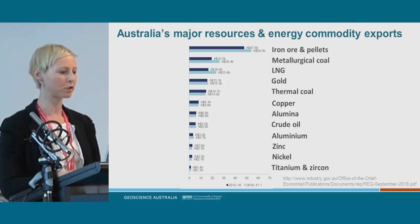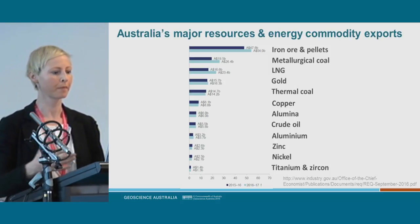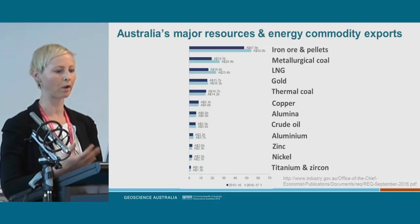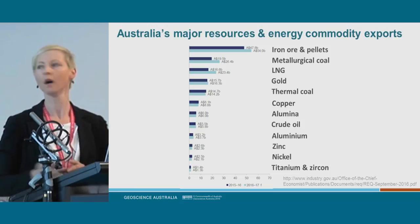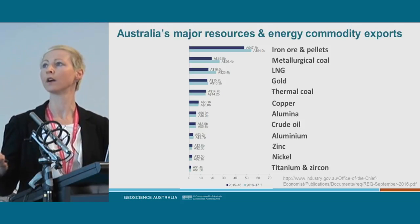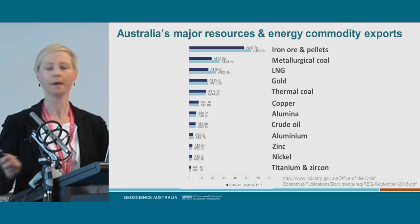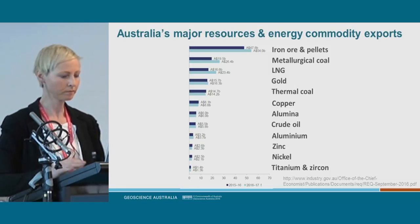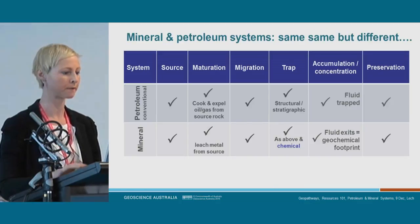Australia is endowed with quite a lot of mineral and energy exports. Iron ore and coal are the two major exports for us, but we do have a lot of other minerals that export and help make Australia what it is.